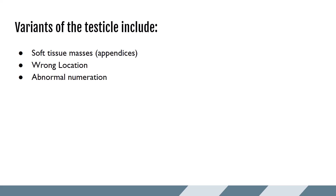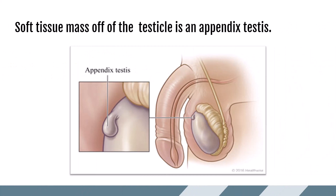Congenital variants of the testicle include soft tissue masses known as appendages or appendices, having the testicles in the wrong location, or having abnormal numeration. Most testicles exhibit smooth borders; however, there may be a small mass or soft tissue protrusion off the edge, known as a testicular appendage or appendix testis, which is a remnant of the Müllerian duct from when the testicles developed. They are commonly seen near the superior portion of the testicle.